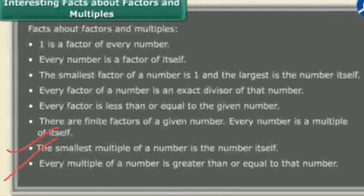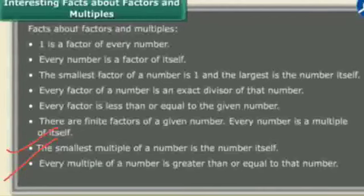Every multiple of a number is greater than or equal to that number. When we find the multiple of 5, we start from the number itself: 5 ones are 5, then 2 times gives 10, then 3 times gives 15. So the smallest is the number itself, and all other multiples are greater than the given number.